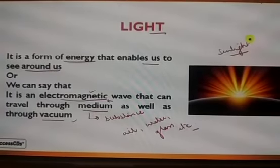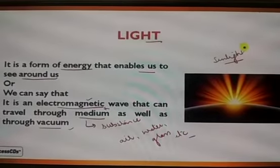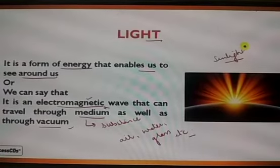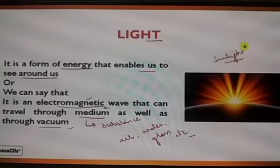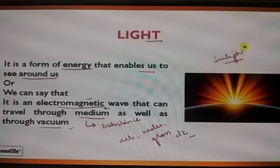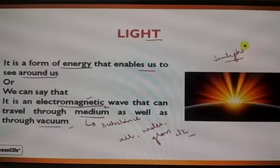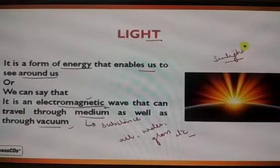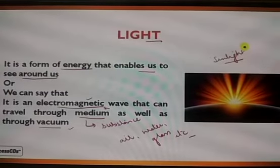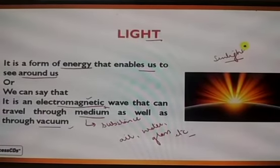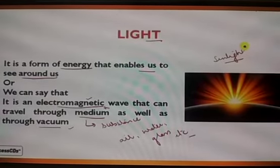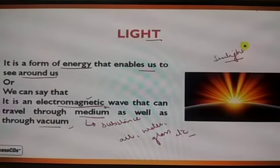So what is light? We have already learned, let us revise once again. Light is a form of energy that enables us to see around us. We can say that it is an electromagnetic wave that can travel through a medium as well as through vacuum. If any medium is there, it will travel; even in vacuum, it can travel.